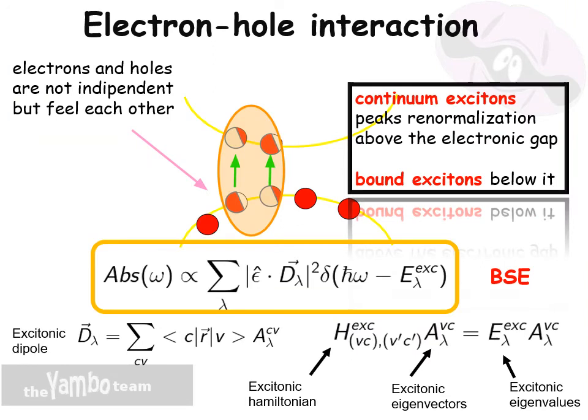We can now move to describe the other crucial ingredient that we have missed up to now: the electron-hole interaction. The electron and hole in the excited system are not independent, but feel each other. This means that continuum excitons with peak renormalization with respect to the independent particle approach appear above the electronic gap, while sometimes new states not present in the independent particle approach can appear below the gap — these are the so-called bound excitons.